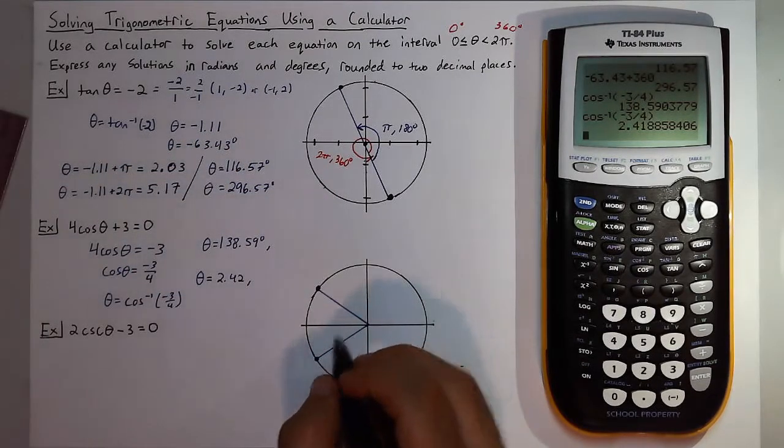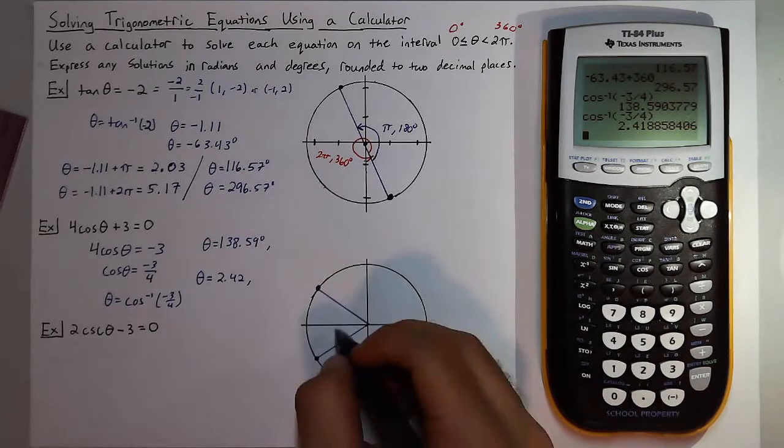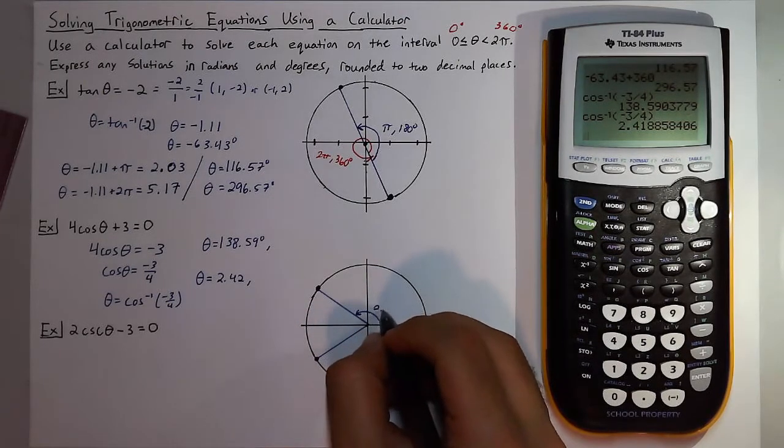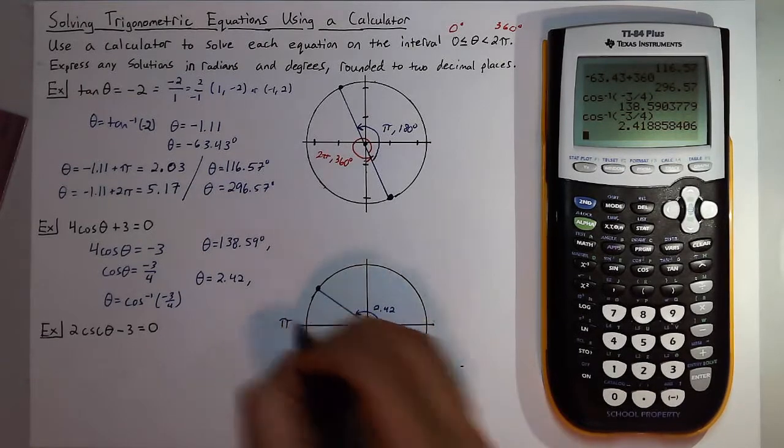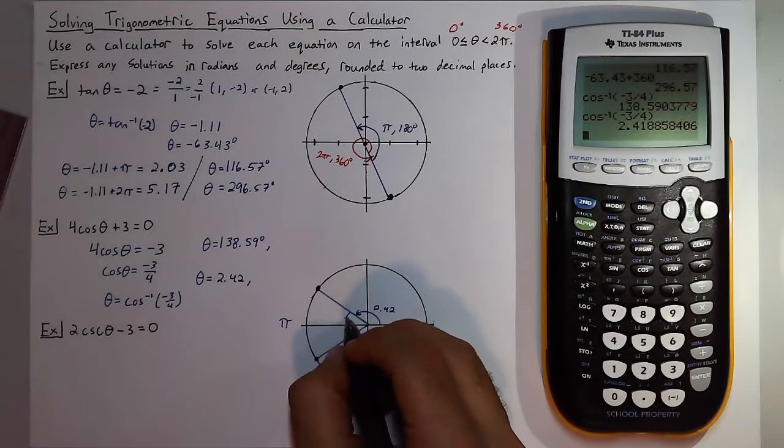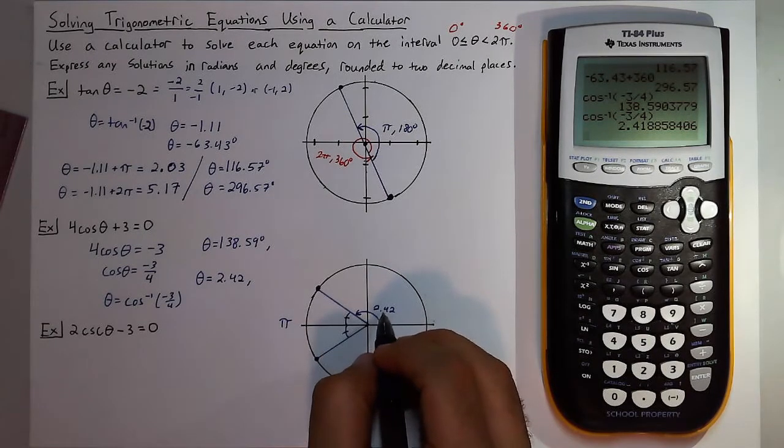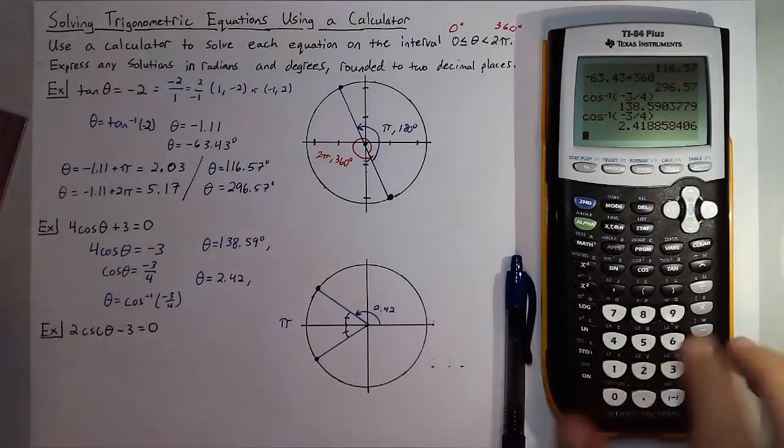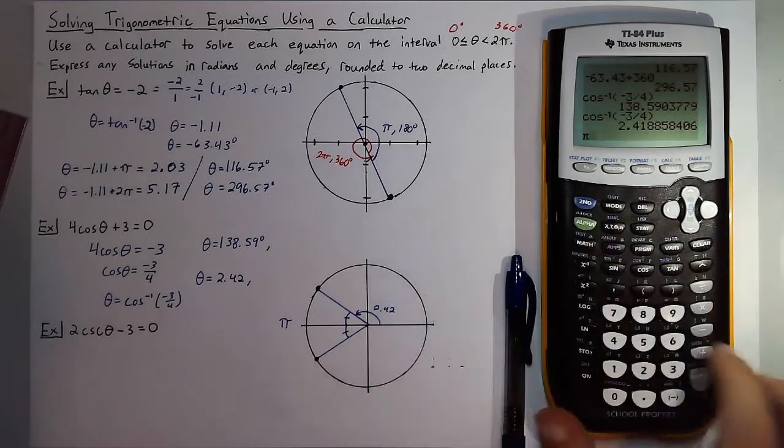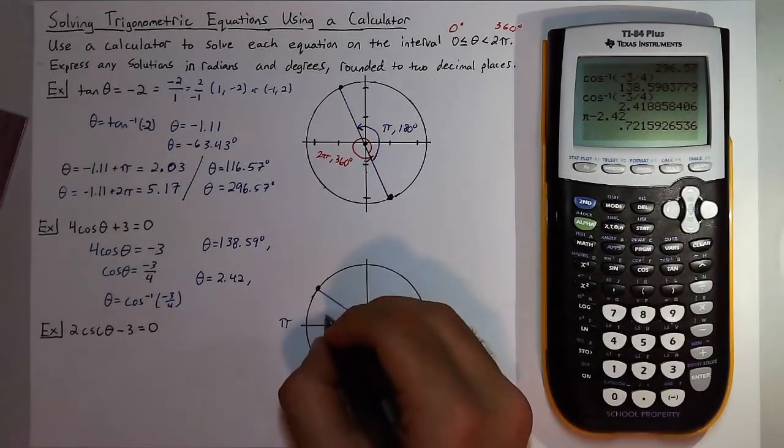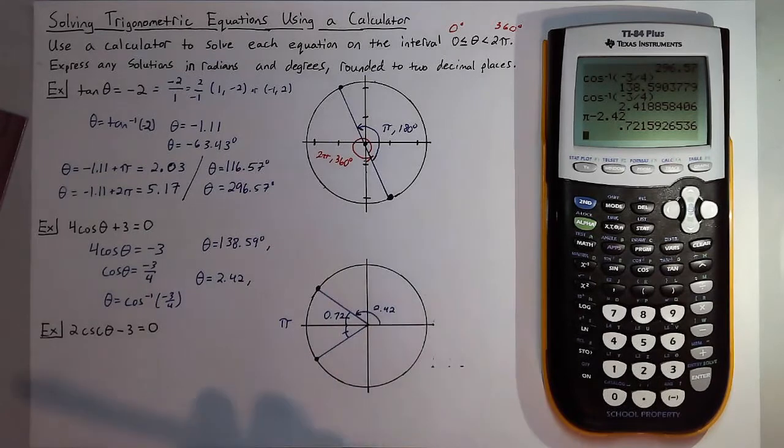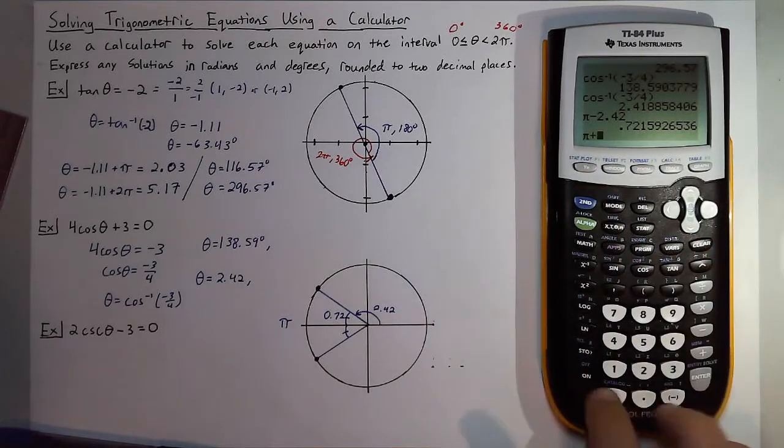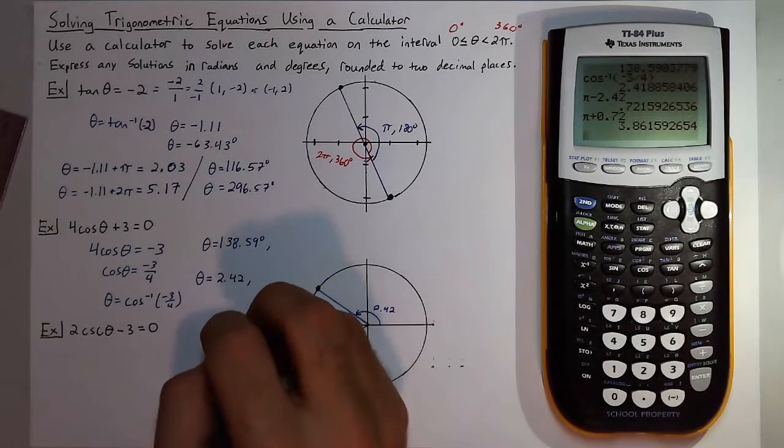The same angle also exists in the third quadrant, same x value and negative 3 fourths for x. So I need to find out what this other solution would be down here. I know this rotation here is 2.42, and a half rotation would be pi. To find out what this rotation would be here, I just have to subtract 2.42 from pi and then add that on to this solution. So I do pi minus 2.42 which will be 0.72, and then I'll add that to pi to get my final solution, so pi plus 0.72 which would be 3.86.